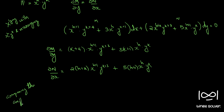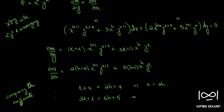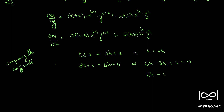Comparing the coefficients: the first equation gives k plus 4 equal to 2h plus 4, and the second equation gives 3k plus 3 equal to 5h plus 5. Simplifying the first equation, 4 and 4 cancel, so k equal to 2h. For the second equation, we get 5h minus 3k plus 2 equal to 0. Substituting k equal to 2h, we have 5h minus 3 into 2h plus 2 equal to 0, which gives 6h minus 5h, so h equal to 2. Therefore k equal to 2h equals 4.